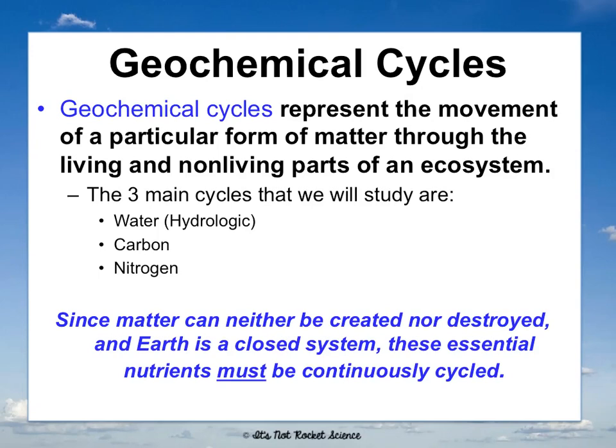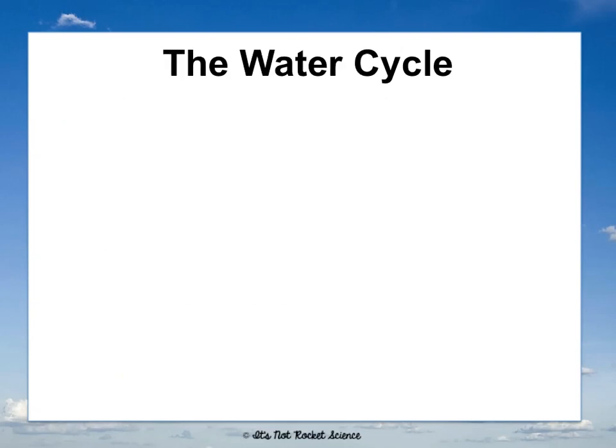If you think way back to physical science, since matter can never be created or destroyed — that's according to the law of conservation of mass — and Earth is a closed system, meaning nothing is being added or subtracted from it entirely, these essential nutrients must be continuously cycling in order for life to function.